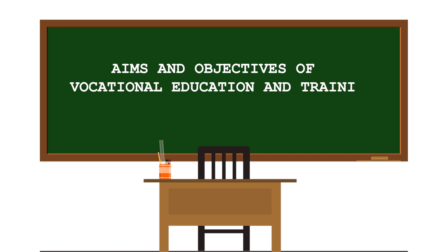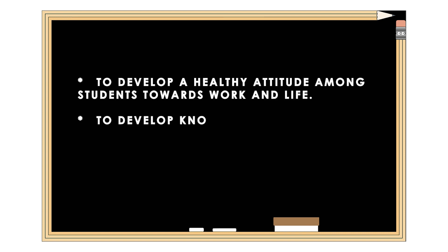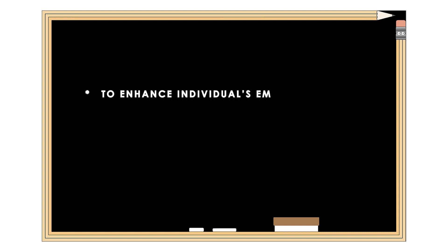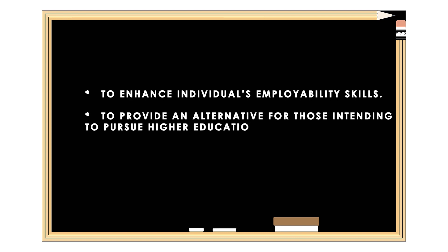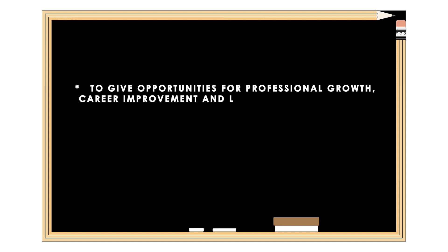The aims and objectives of vocational education and training include: to develop a healthy attitude among students towards work and life, to develop knowledge and skills for a variety of occupations, entrepreneurship and self-employment, to enhance individuals' employability skills, and to provide an alternative for those intending to pursue higher education without particular interest or purpose.